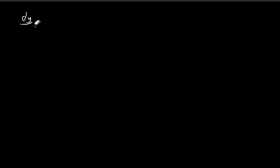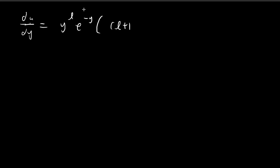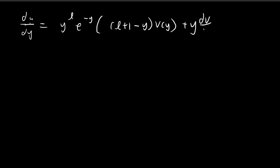Let's combine some terms together. For du/dy, I'm going to pull out y to the power of l and e to the power of negative y outside the bracket. Inside the bracket I get l plus 1, and since I'm only pulling out y to the power of l I need to compensate, giving a minus y. So I get an extra minus y times v of y. For the second term there's an extra y, so I get plus y times dv/dy. This is the first derivative.